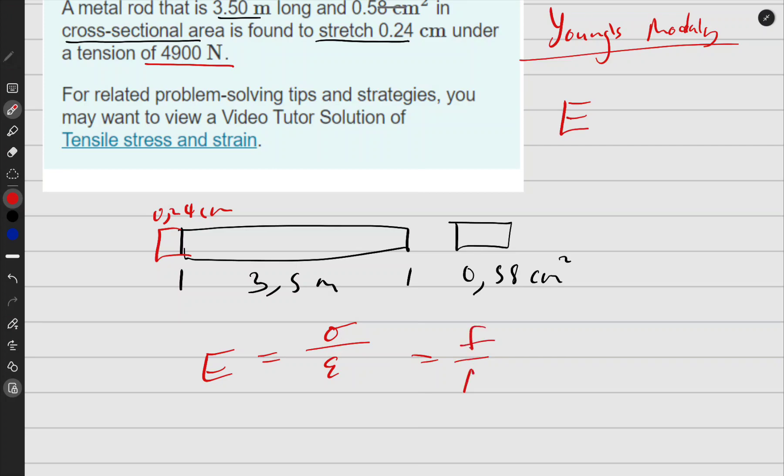They normally denote force with P. And strain is going to be change in length over initial length. But because it's in the bottom, I have to flip it up, so it's length initial over change in length.